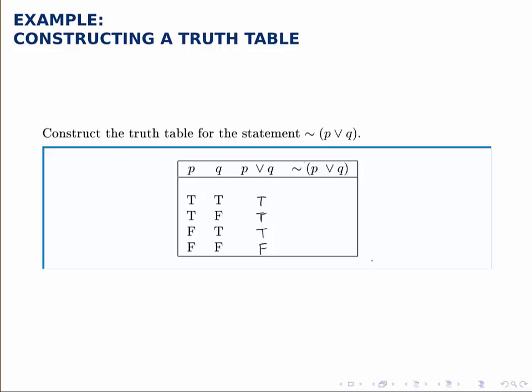Then to take the negation of that, we simply take the column we just built and flip each of the truth values. Trues become false and false becomes true. So that's the final column for this compound statement not P or Q.